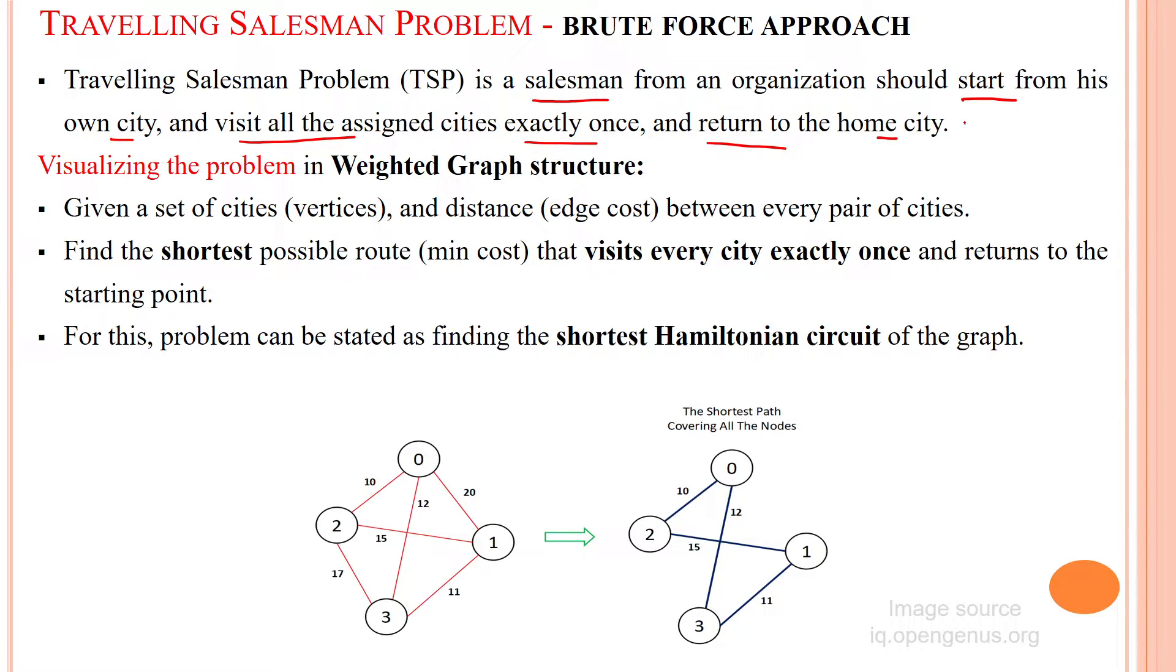So the scenario has to be fixed based upon the graph structure here. Here the zero is the starting city where his organization is located. Then he is assigned with three more cities he has to visit for marketing purposes.